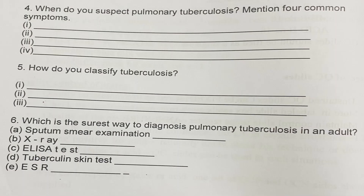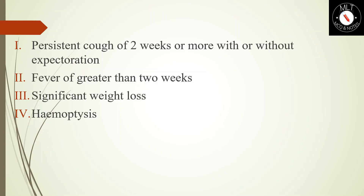Fourth question: When do you suspect pulmonary tuberculosis? Mention four common symptoms. First: persistent cough of two weeks or more, with or without expectoration. Second: fever of greater than two weeks. Third: significant weight loss. Fourth: hemoptysis — that is, blood in sputum.